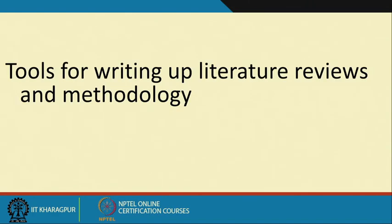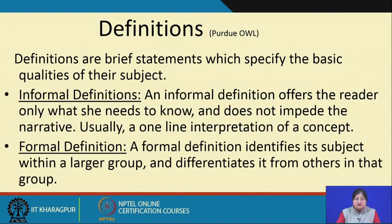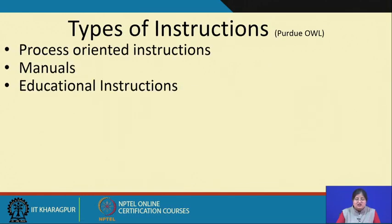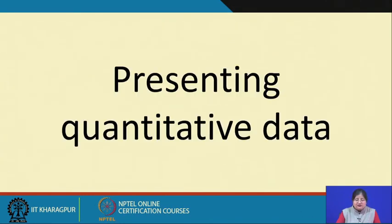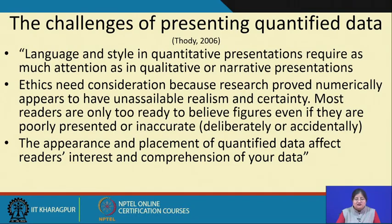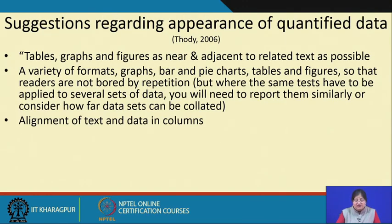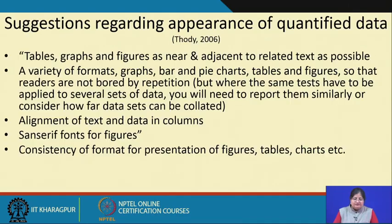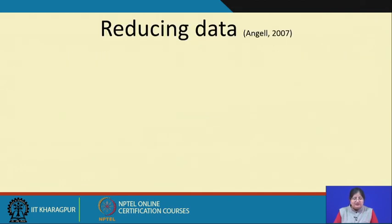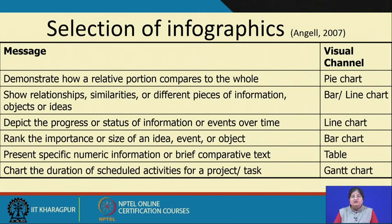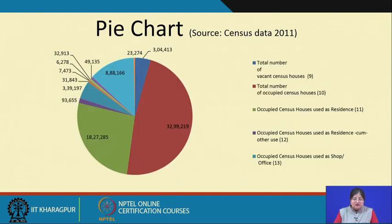Then we started talking about tools for writing up literature reviews and methodology — definitions, descriptions, different types of descriptions, composing descriptions, instructions, different types of instructions. Then we talked about presenting quantitative and qualitative data, various challenges, deciding when and how to quantify data, and suggestions regarding the appearance of quantified data. We discussed reducing data, infographics, different types of infographics, and how you select different types of infographics depending on the message you need to send.